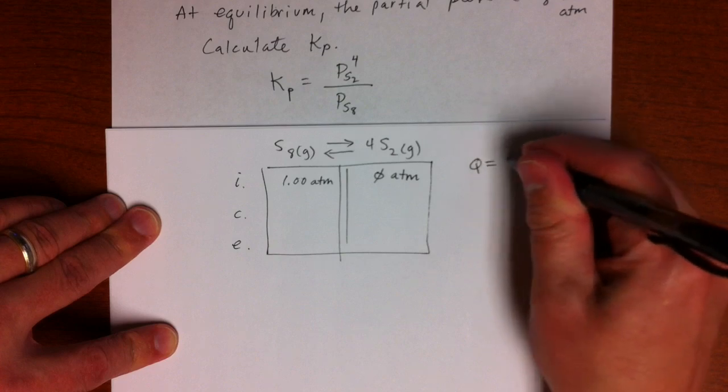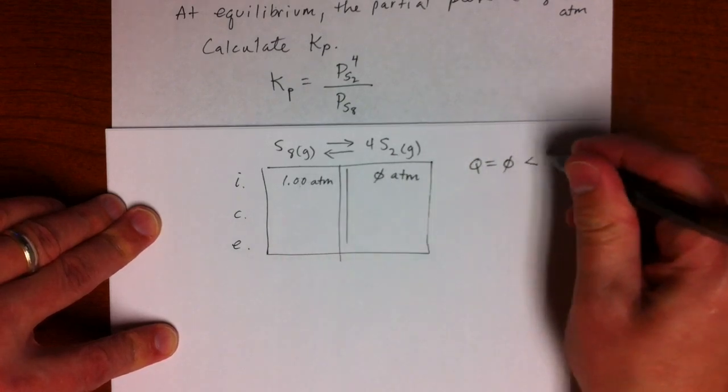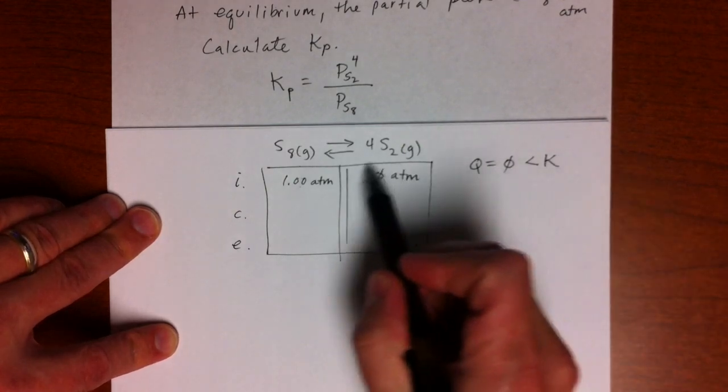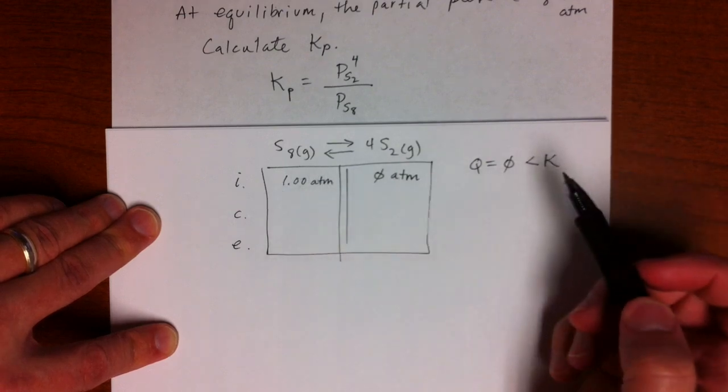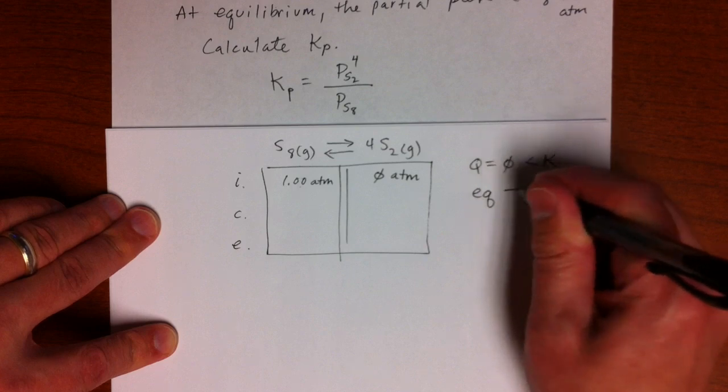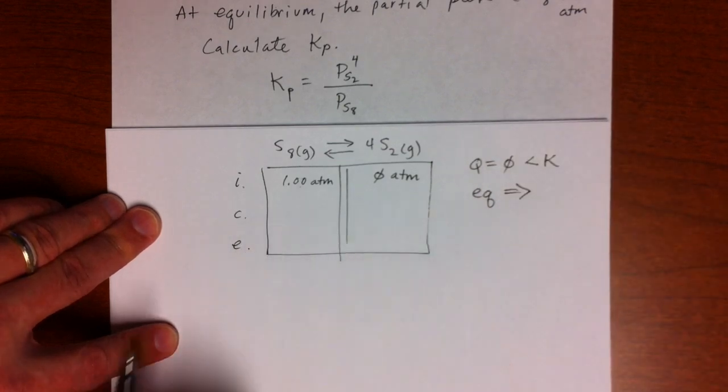So it looks like Q would be zero, right, because products over reactants, which means Q is less than K, which means that the products must increase and the reactants must decrease. So the equilibrium has to be to the right. The reaction has to go to the right.